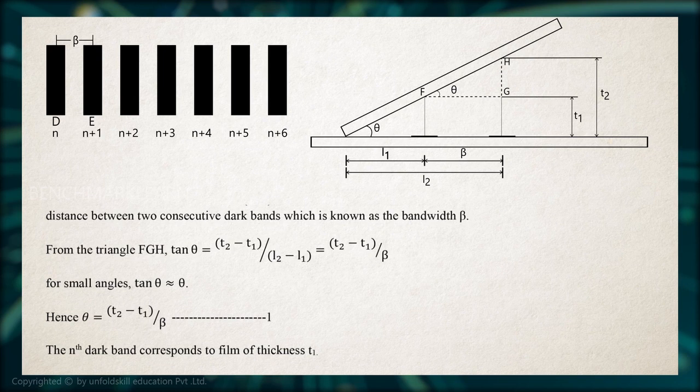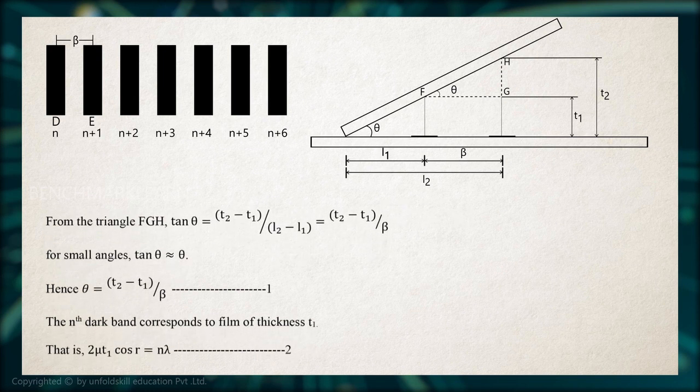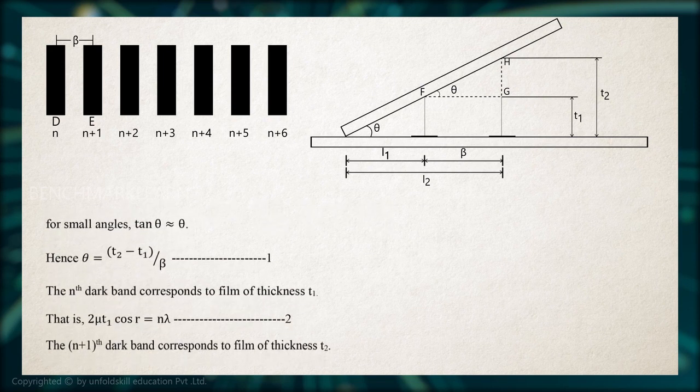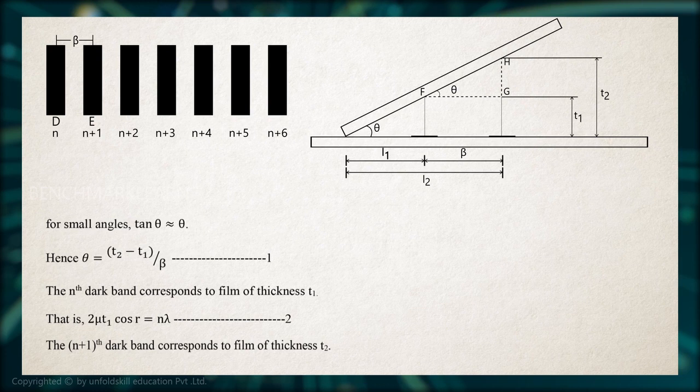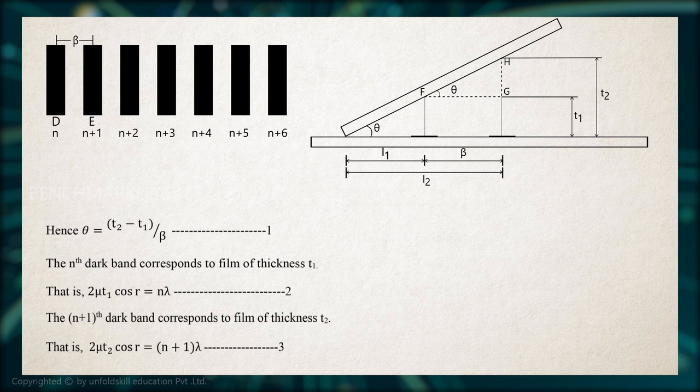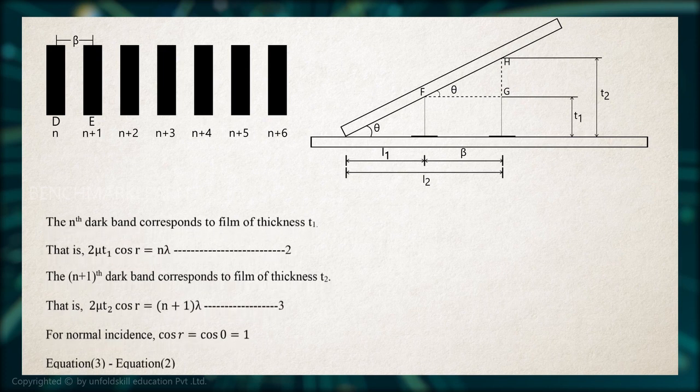The nth dark band corresponds to film of thickness T1, that is 2 mu T1 cos r equal to n lambda. The n plus 1th dark band corresponds to film of thickness T2, that is 2 mu T2 cos r equal to n plus 1 into lambda. For normal incidence, cos r equal to cos 0 equal to 1.